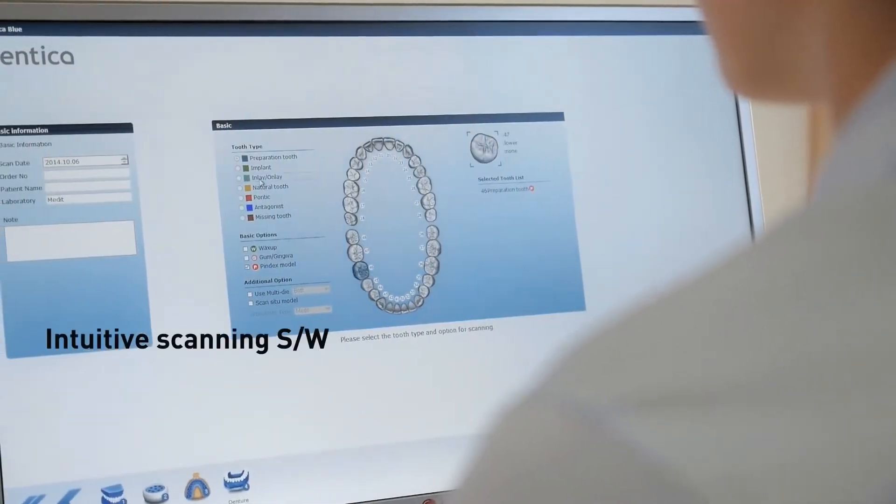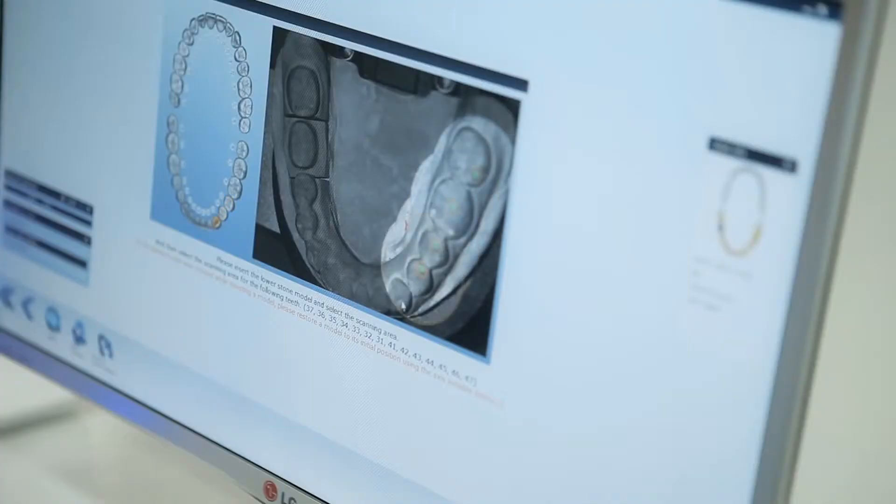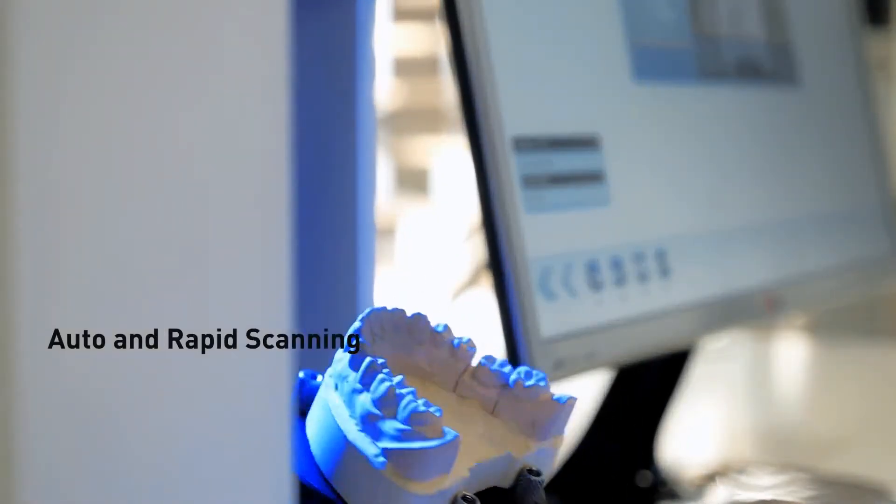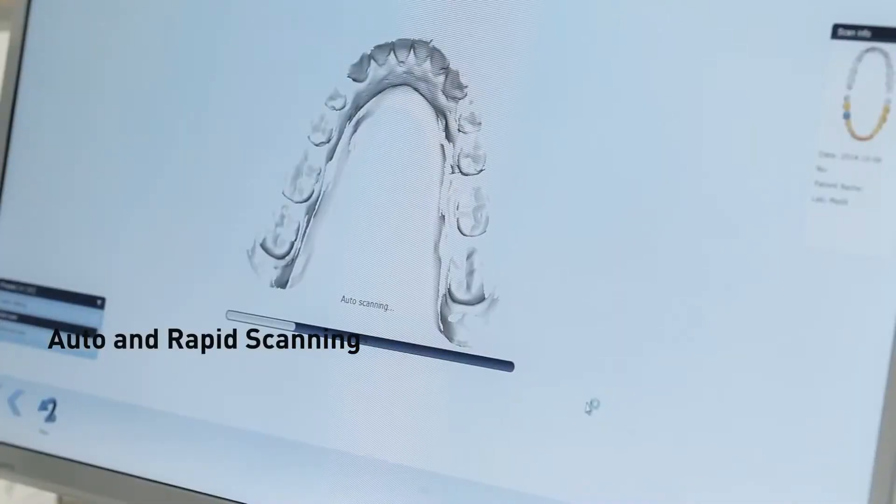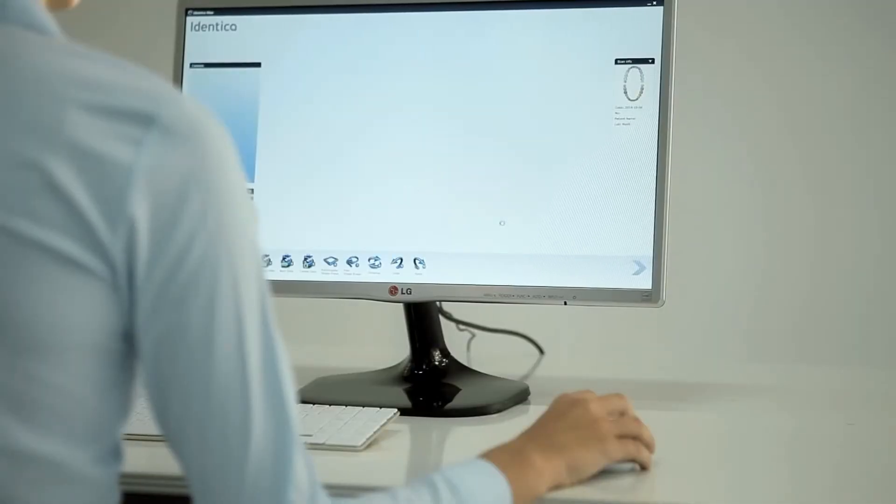Identica Blue's scanning software employs very simple and easy-to-follow scan sequences. Simply select the scanning area, then press Next to start the auto-scanning sequence. Auto-scanning allows the operator extra time to handle other tasks increasing productivity. The easy-to-follow scan software will help to expedite the operator's workflow.